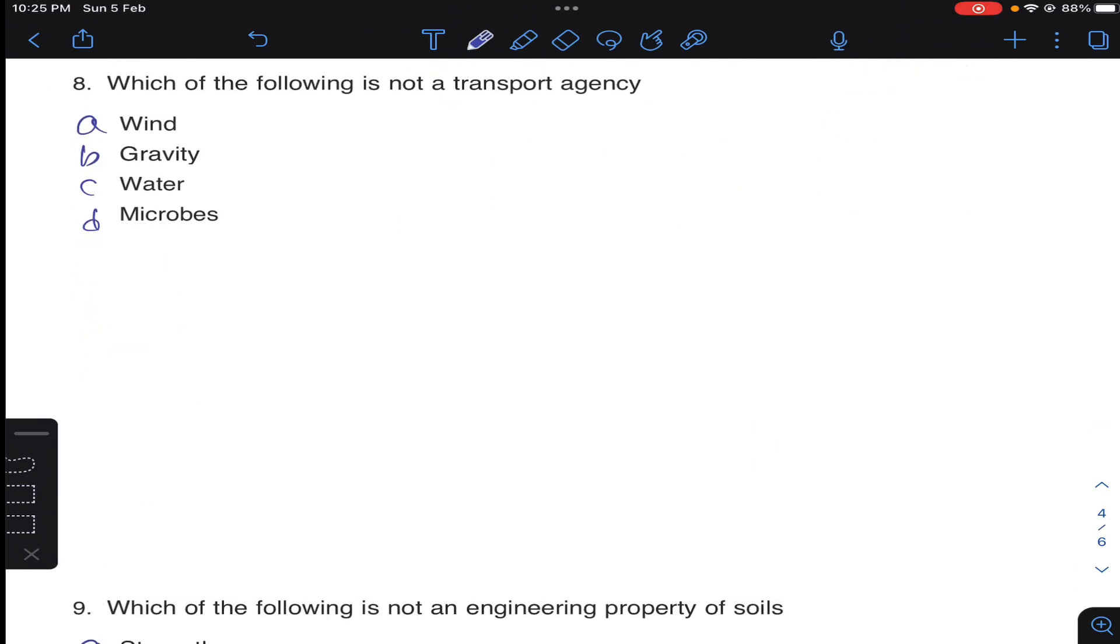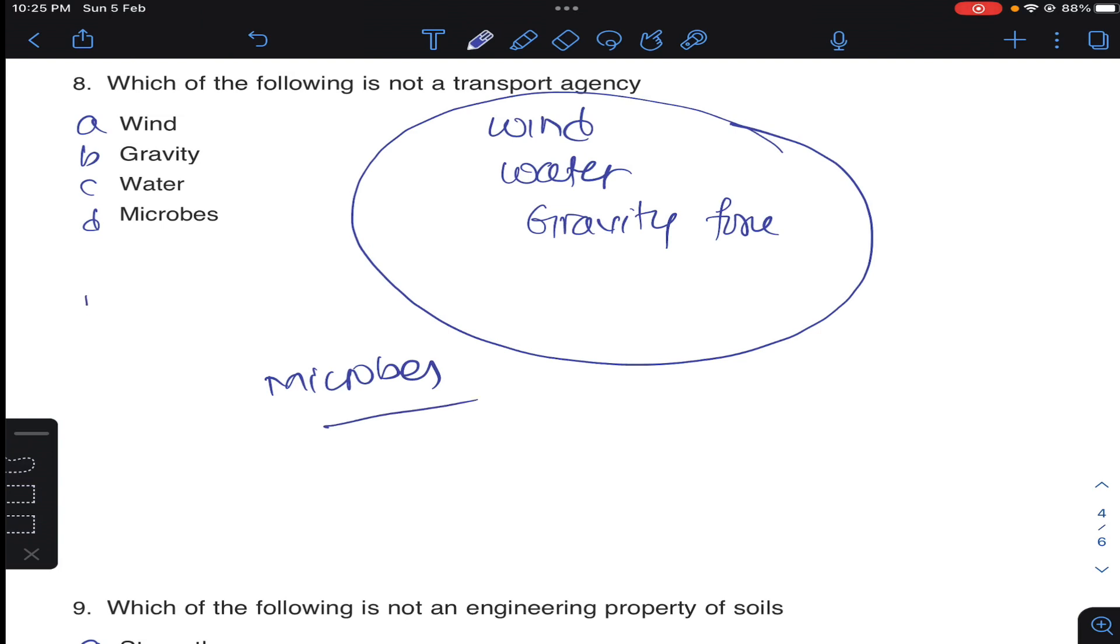Next question: which of the following is not a transport agency? So generally wind, water, gravity force - these are all transporting agency for the soils. But microbes is not transporting agency, so answer D for question number eight.